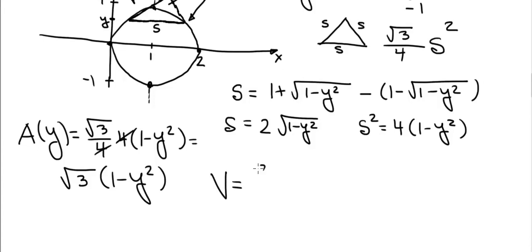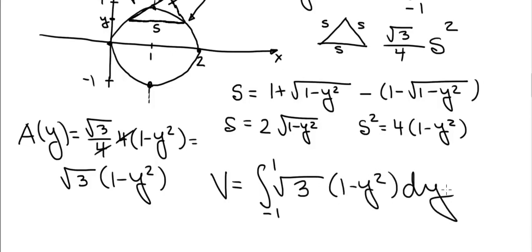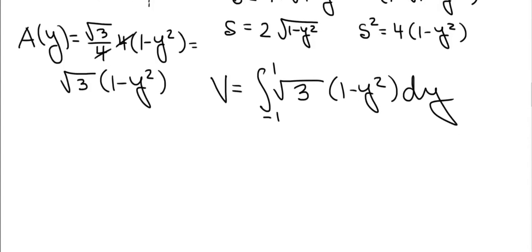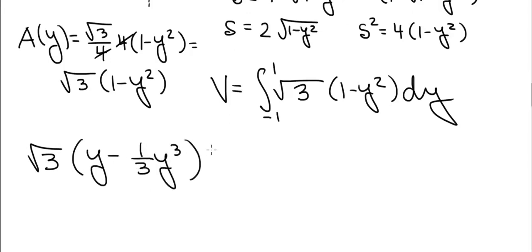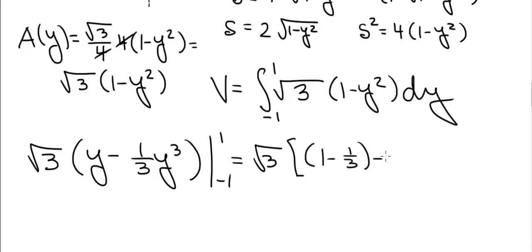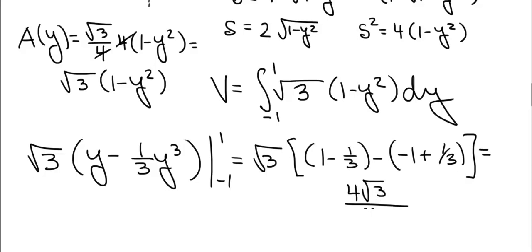The volume equals the integral from minus 1 to 1 of A(y) dy, which is the integral of root 3 times (1 minus y squared) dy. This evaluates to root 3 times (y minus one-third y cubed) evaluated from minus 1 to 1. Plugging in: root 3 times [(1 minus 1/3) minus (minus 1 plus 1/3)] equals root 3 times [2/3 minus (minus 2/3)] equals root 3 times 4/3, giving a final answer of 4 root 3 divided by 3.